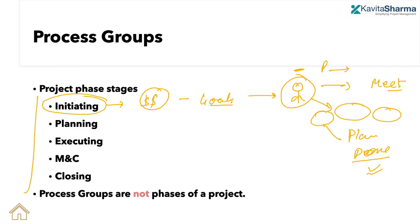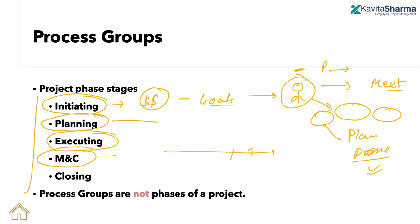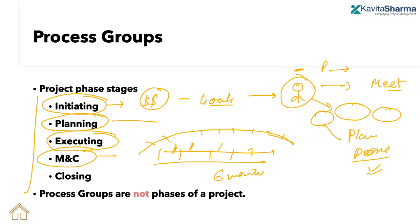Initiating is where the senior manager says 'let's get started' and announces the project to the world. Planning is when a plan is made. Executing is when the team does the work. Monitoring and controlling is an umbrella process — let's say this project is six months long. You want to check every Friday, or every month, or biweekly, whether the work is getting done as per the plan.